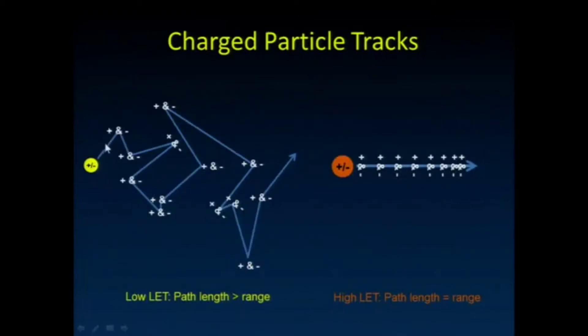Notice this low LET radiation, so this could be an electron. It just bounces around. It has a very long path length, but its range is quite a bit shorter than that.